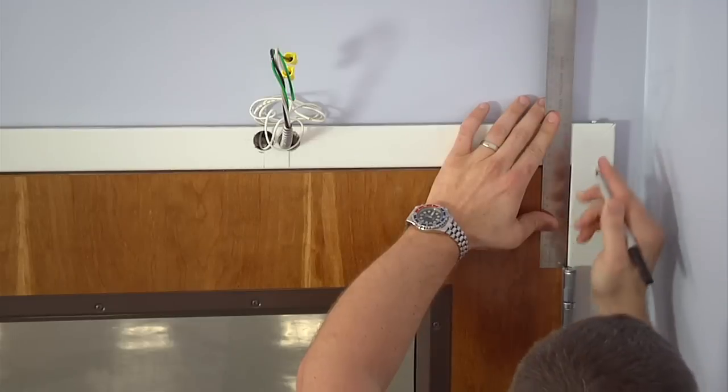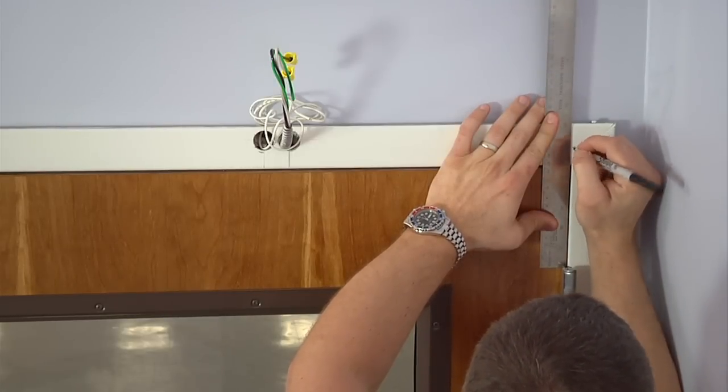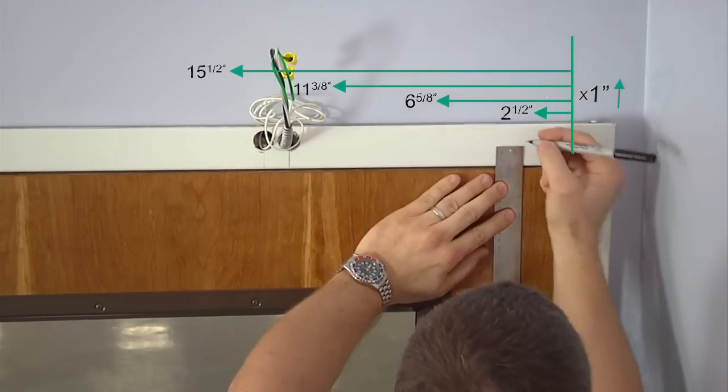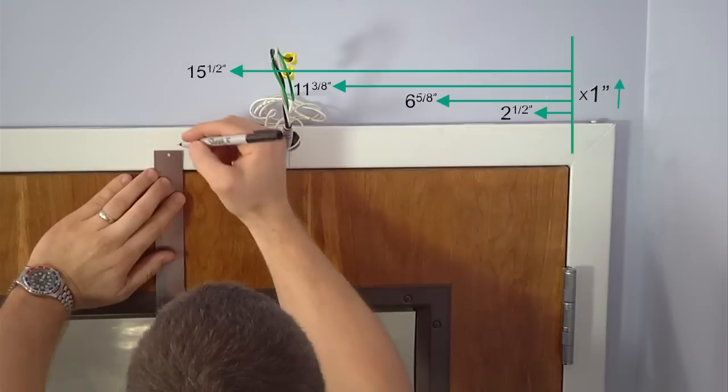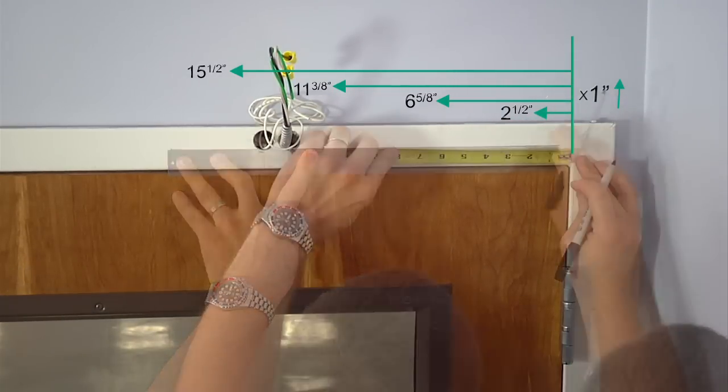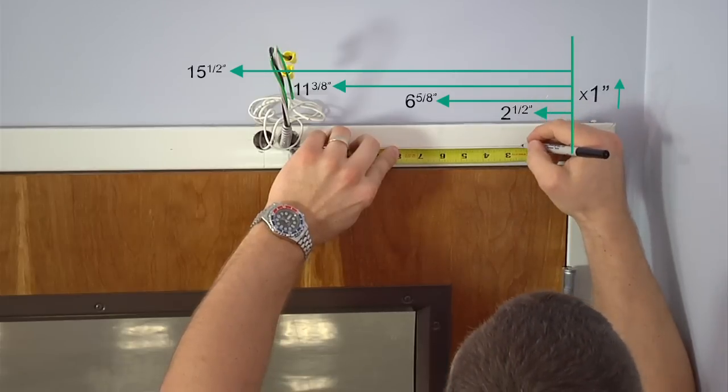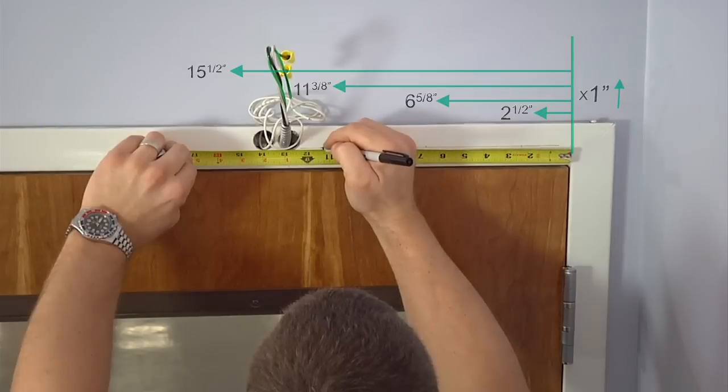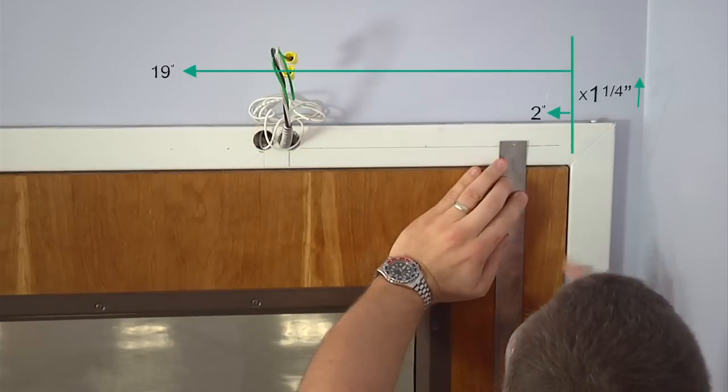First, locate the mounting holes using the center line of the hinge as a reference. Measure and mark the mounting holes as shown on the template. Note that four of the holes are one inch from the bottom of the frame, while the outside two are a quarter inch higher.